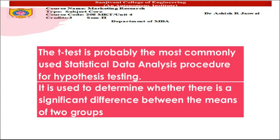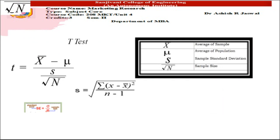Let us try to understand how we calculate the t-test. The t-test formula is: t = (x̄ − μ) / (s / √n), where x̄ is the average of the sample, μ is the average of the population, s is the standard deviation, and n stands for sample size.